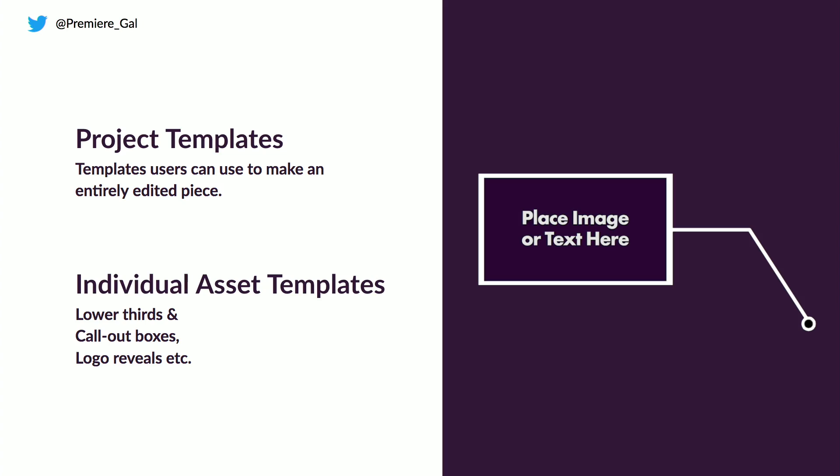I also want to differentiate project templates and individual asset templates. Project templates are an entire video I create as a template so people can edit and export it as its own video. Individual assets are things like call-out boxes — I actually have a free call-out box template on my YouTube channel you can download — lower thirds, logo reveals, and so on. Those are assets you can include in your larger projects. So those are the two different types.